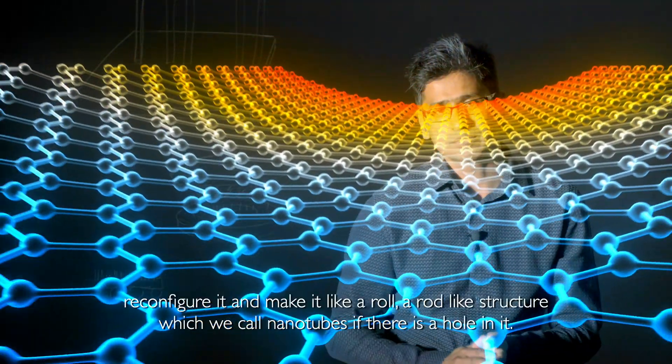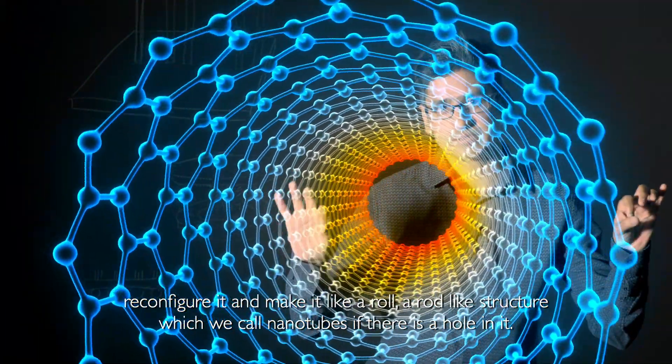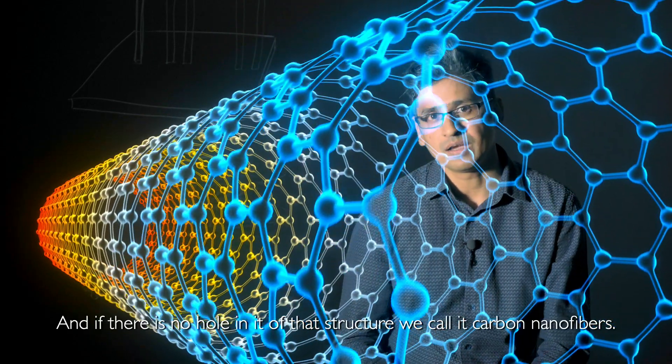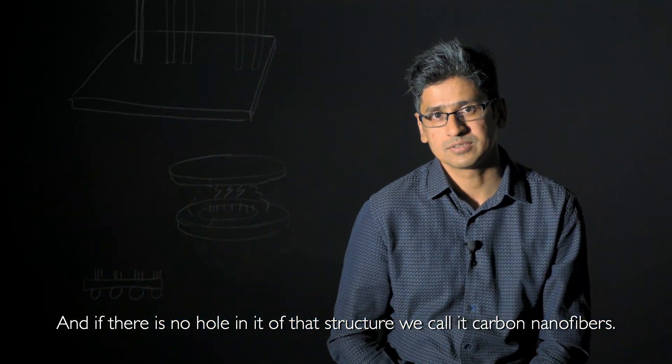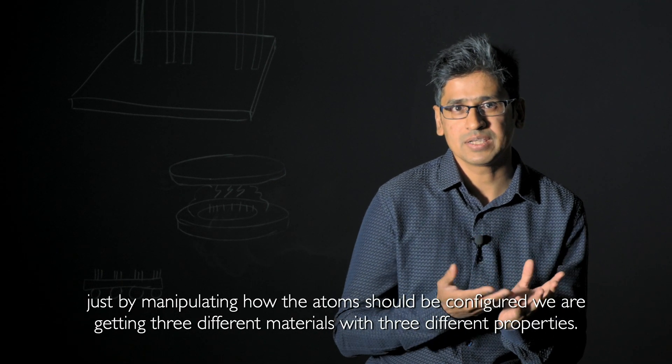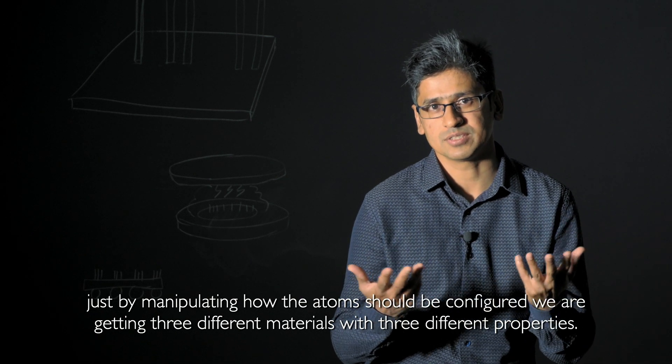But then we take the same carbon atoms, reconfigure them, and make a rod-like structure, which we call nanotubes if there is a hole in it. If there is no hole in that structure, we call it carbon nanofibers. So you see, the same carbon atoms, just by manipulating how the atoms are configured, create three different materials with three different properties.